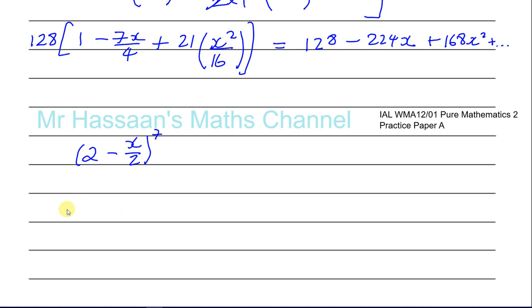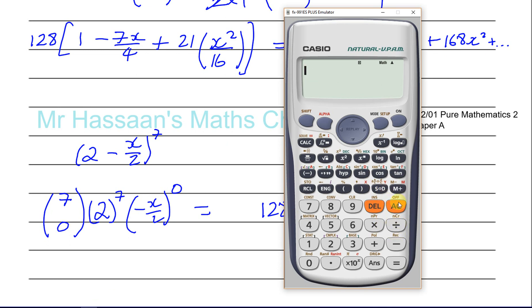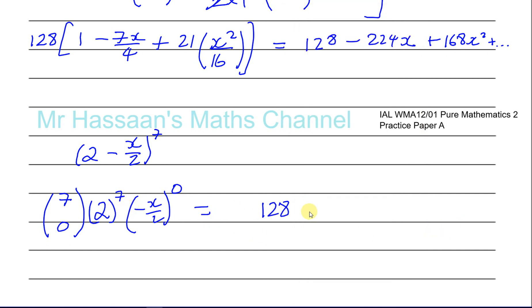Using the NCR method: you start with 7C0 for the first term. You take the first term raised to the highest power — 7 — and the second term raised to the lowest power — 0. 7C0 is 1, and 2 to the power of 7 is 128, and anything to the power of 0 is 1, so that gives you 128. If you don't know how to use the NCR button, it's just below the AC button on the calculator. You press 7, shift, NCR, 0, and that gives you 1.